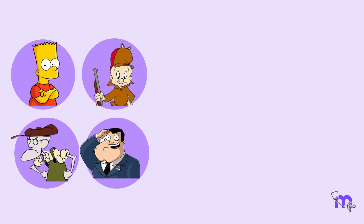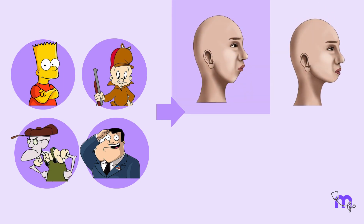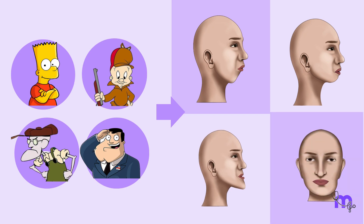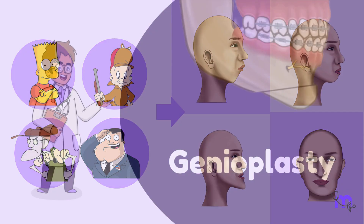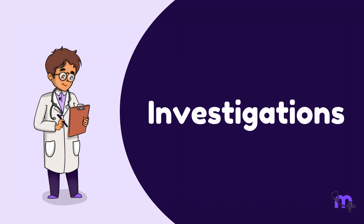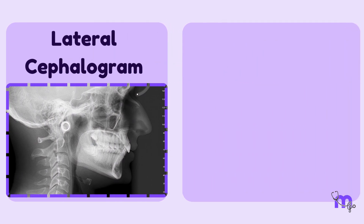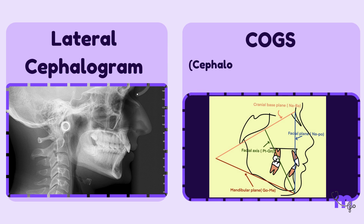Let us reimagine our cartoon characters into very real-life situations. Imagine four patients — patient A, patient B, patient C, and patient D — all having these chin deformities and needing correction. Before jumping into surgery, certain pre-operative investigations have to be done. These include radiographs like OPG, lateral cephalogram, and radiographic analysis like COGS, or cephalometrics for orthognathic surgery (COGS), which are specifically performed.